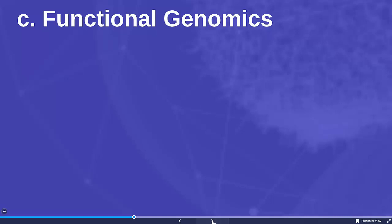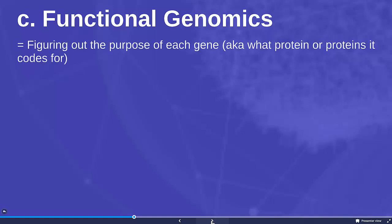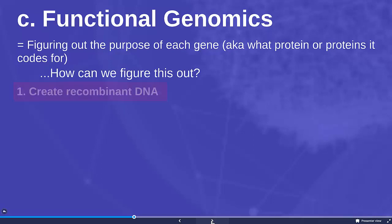In functional genomics, our goal is to figure out what the actual function of each particular gene is — figuring out the purpose of each gene, or what protein or proteins does the gene code for. So how can we figure this out? We have a couple of ways.